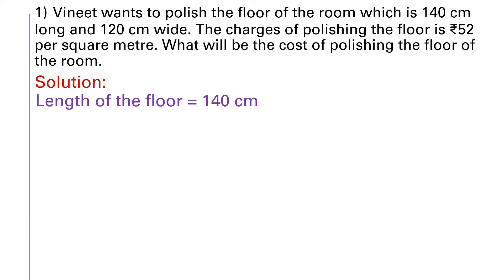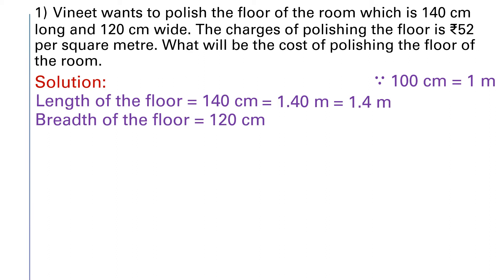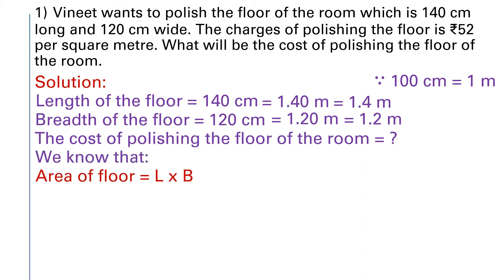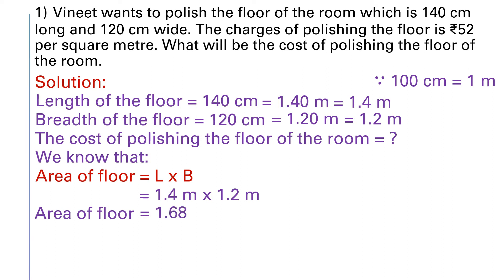Length of the floor is 140 cm and breadth is 120 cm. Since the cost is given in square meters, we convert: 140 cm = 1.4 meter, and 120 cm = 1.2 meter. Area of floor = length × breadth = 1.4 m × 1.2 m. 1.4 × 1.2 = 1.68, and meter × meter gives us square meter.